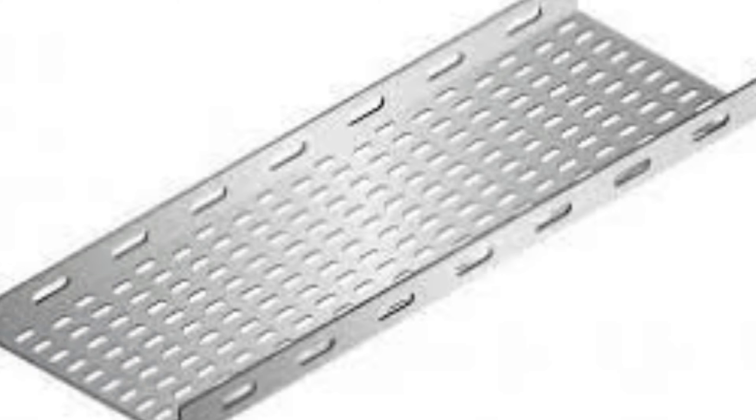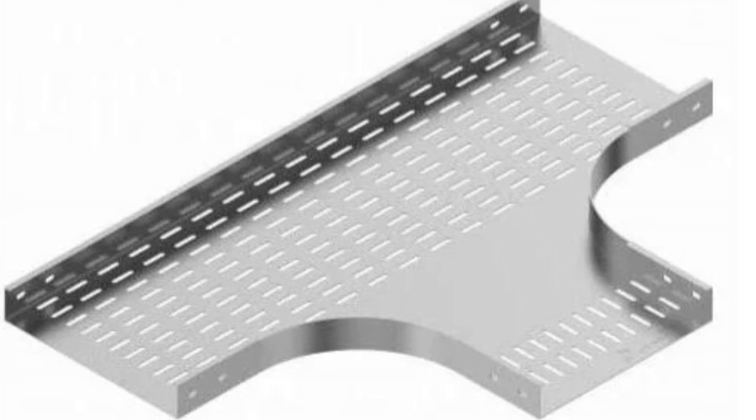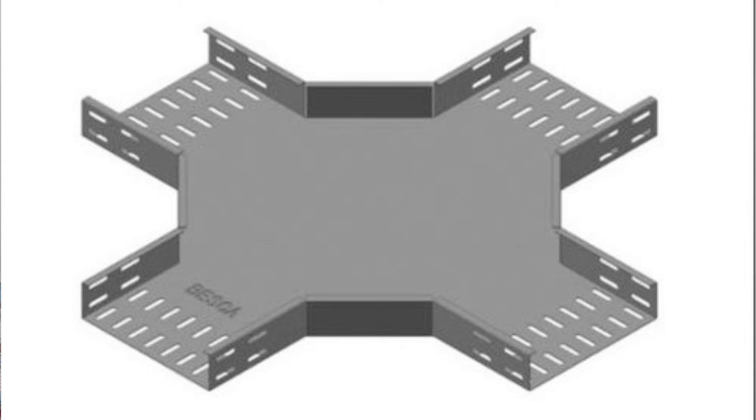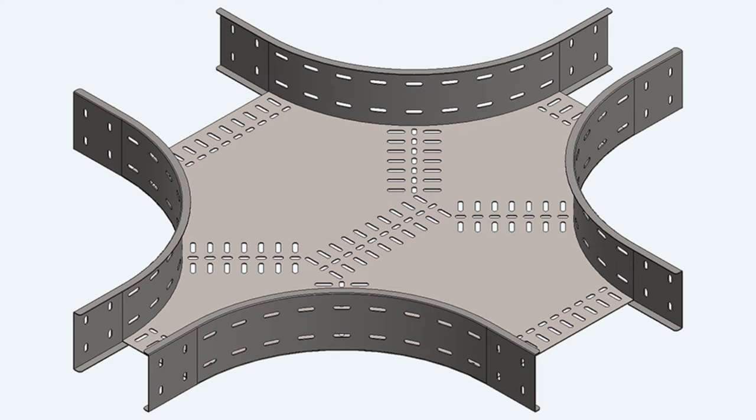Now let's look at the several types of connectors commonly used in construction. First we have the straights. We have the T-shape, which comes in equal T and unequal T. Then we have cable that branches to four directions, which is the cross — equal cross and unequal cross.